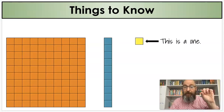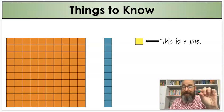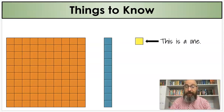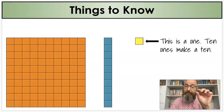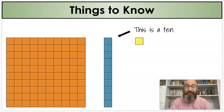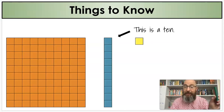Let's go ahead and review some things. First, this is a one, and you can see that in my hand. It's a little bitty square. That's a one. It's only worth one. Ten ones, or ten of these, make a ten. And this is a ten. You may have seen this in your classroom.